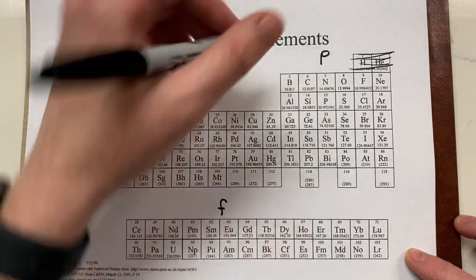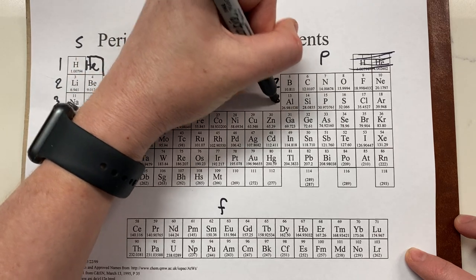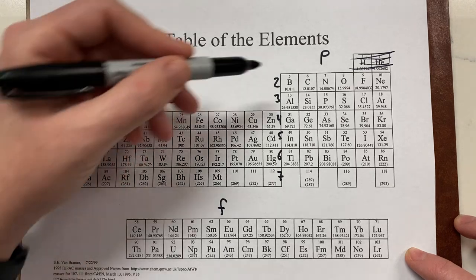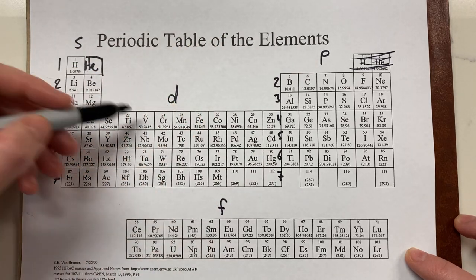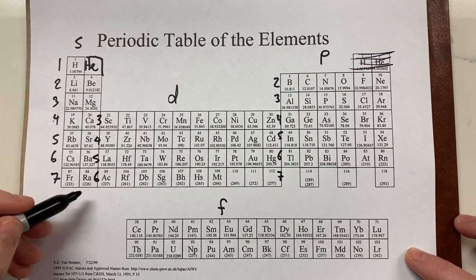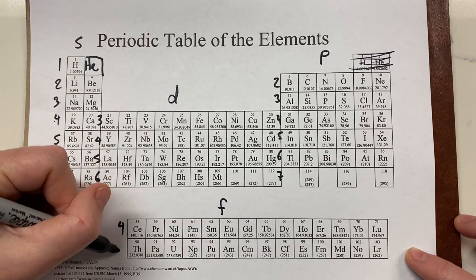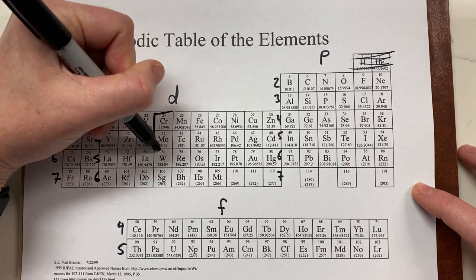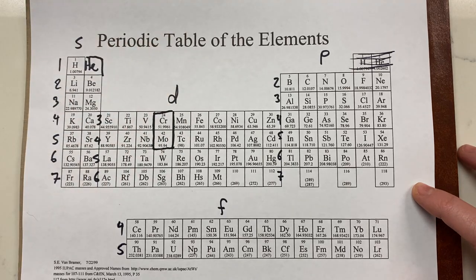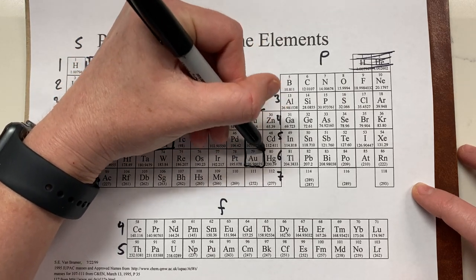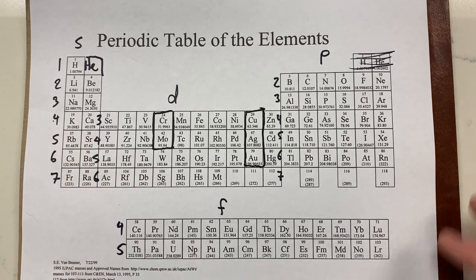Then we move to P — we start P with 2, 3, 4, 5, 6, 7. D starts with 3, 4, 5, 6. And F starts with 4 and then 5. Once we have that done, we want to outline our exceptions: chromium and molybdenum are exceptions, and copper, silver, and gold are exceptions from standard electron configuration.